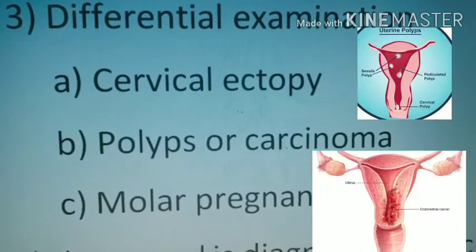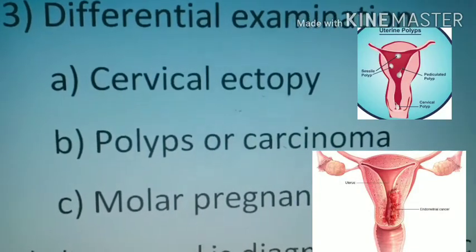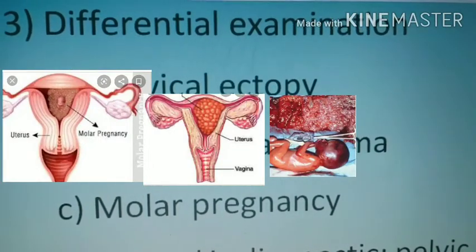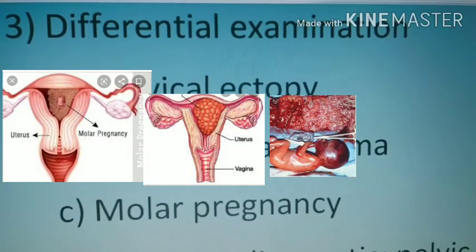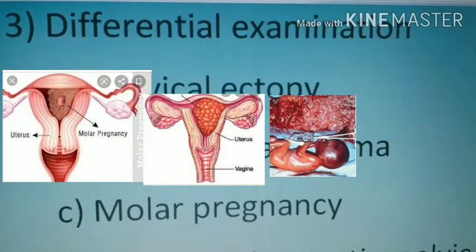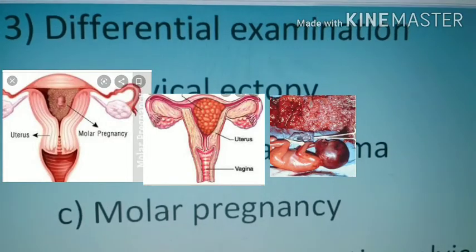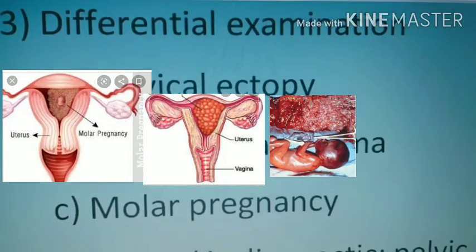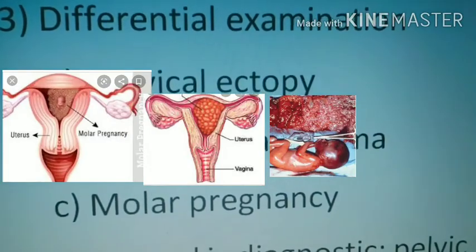The second differential is polyp or carcinoma. The third is molar pregnancy. Molar pregnancy is a tumor that develops in the uterus at the beginning of pregnancy. Here the placenta won't develop properly; instead it forms a cyst and does not supply food and oxygen to the embryo, because of which bleeding is seen again.